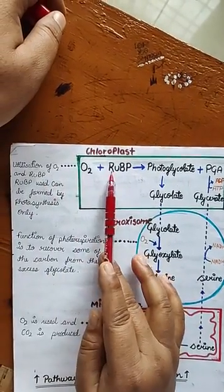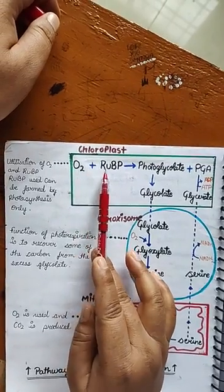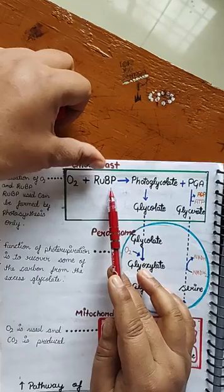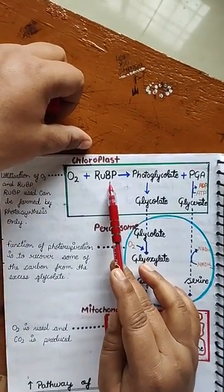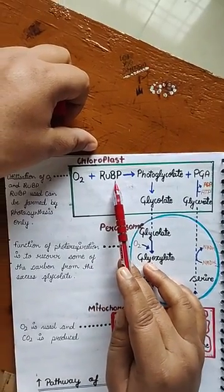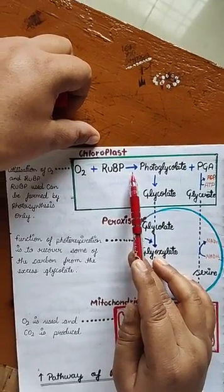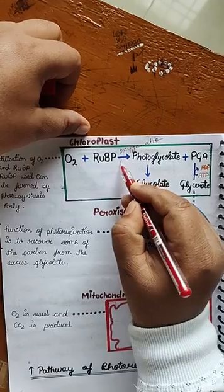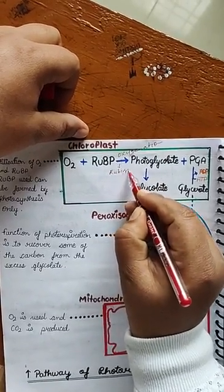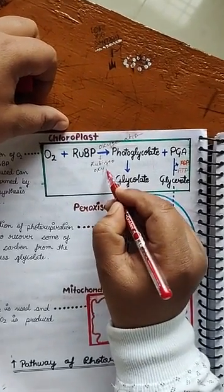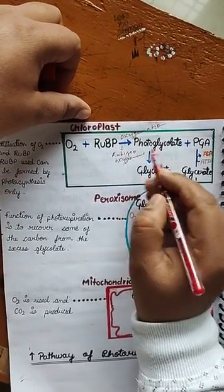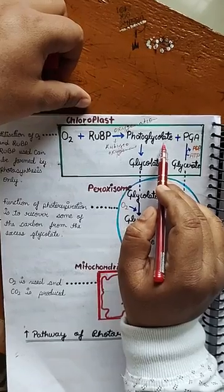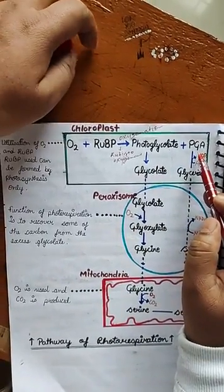सबसे पहले जो RUBP होता है, ये oxygen को utilize करेगा जब oxygen का level plant cell की mesophyll cell में ज्यादा होगा। तब mesophyll cell के chloroplast में जो RUBP है, वो oxygen को carry करेगा और oxygenation process होगा। इस process में भी RuBisCO oxygenase enzyme यूज होगा। और RUBP और O2 मिलकर phosphoglycolate का formation करेंगे और PGA बनेगा।